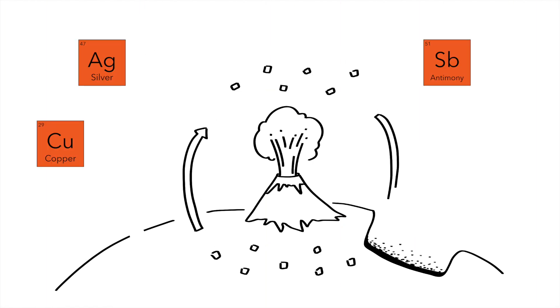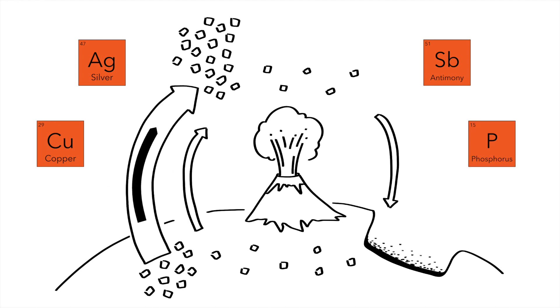Copper, silver, antimony, and phosphorus, on the other hand, we are extracting so fast that they accumulate in nature, which makes them a major issue.